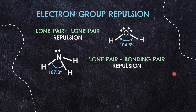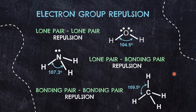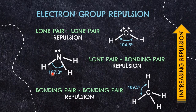The weakest repulsion among all is between bonding pair and bonding pair electrons, because electrons in a bond are considered stable, resulting in the largest bond angle of 109.5°. In conclusion, the strength of electron pair repulsion increases in this order: bonding pair–bonding pair, then lone pair–bonding pair, then lone pair–lone pair electrons.